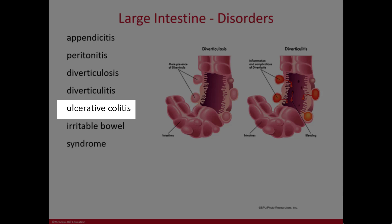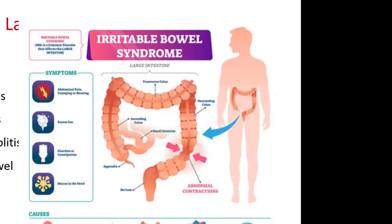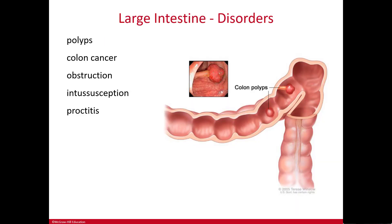Ulcerative colitis is extensive inflammation and ulceration in the lining of the large intestine. It produces bouts of bloody diarrhea, crampy abdominal pain, weight loss, and electrolyte imbalances. Irritable bowel syndrome is a fairly common large bowel disorder presenting with crampy abdominal pain, flatulence, and either constipation or diarrhea. There is no single diagnostic test — it's usually diagnosed based on reported symptoms.